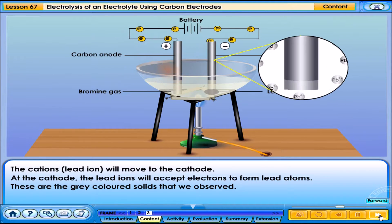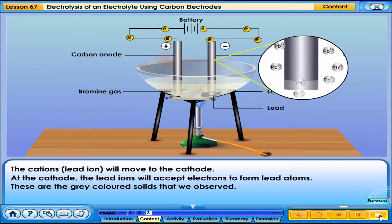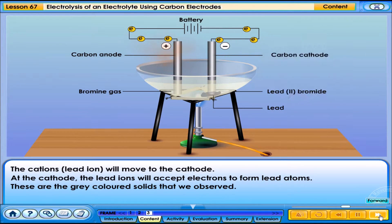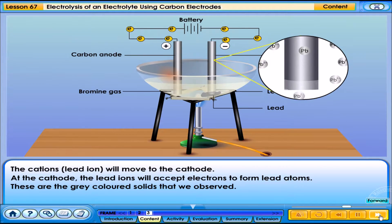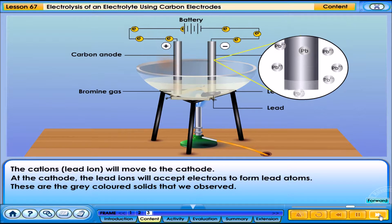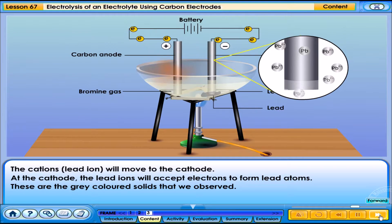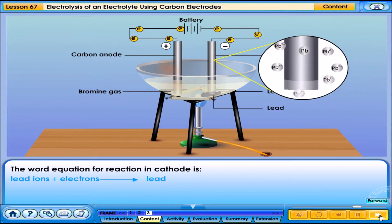Electrolysis of lead-2-bromide can only happen when the solid is in the molten state. At the cathode, the lead ions will move to the cathode and accept electrons to form lead atoms. These are the grey-coloured solids that we observed. The word equation for the reaction at the cathode is shown.